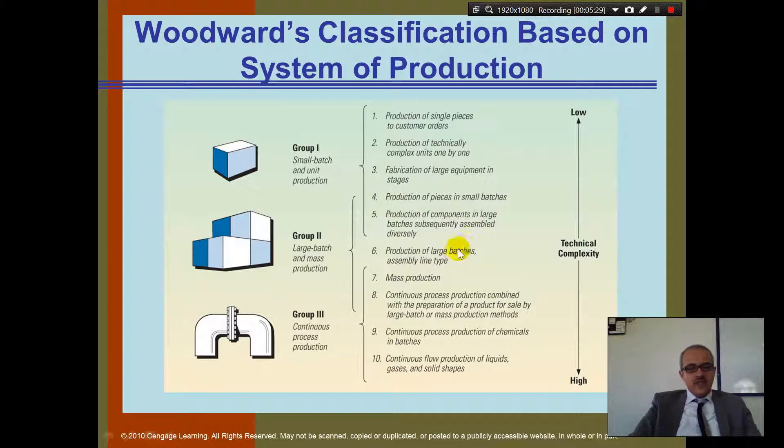Number 6, it says production of large batches, assembly line type. So here we start to move to large batch. Do you guys know what's a large batch? It's more like you put the pizza. Have you seen the trays? Sometimes you put the pizza here, the dough. Then it moves. I make another one and it moves. I make a third one and it moves. Then someone next to me will put the sauce. And then the pizza will move. I put the sauce and pizza will move.